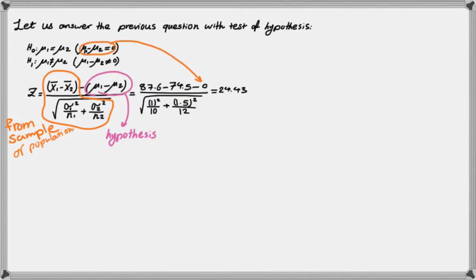So let's calculate that. So we have x̄1 and x̄2, we'll place it in here. And for μ1 minus μ2, you have to put your hypothesized difference, which in this case is equal to zero. And you have σ1 and σ2, n1 and n2, you plug it in, you calculate the value of z, 24.43.